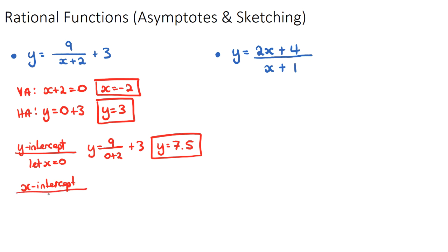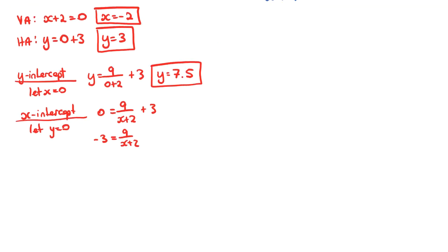For the x-intercept, we let y equal zero. So zero equals nine over x plus two plus three. Moving the three over gives negative three equals nine over x plus two. Multiplying up by x plus two gives negative three x minus six equals nine. Therefore negative three x equals 15, so x equals 15 over negative three, which is negative five. The x-intercept is at x equals negative five.